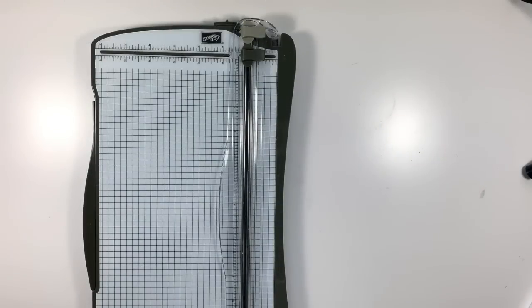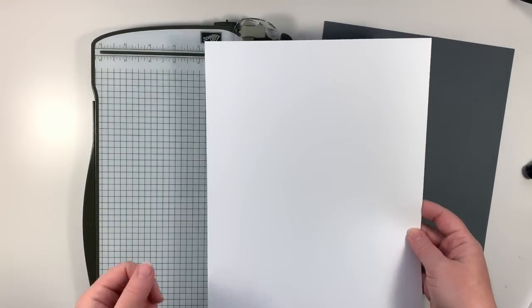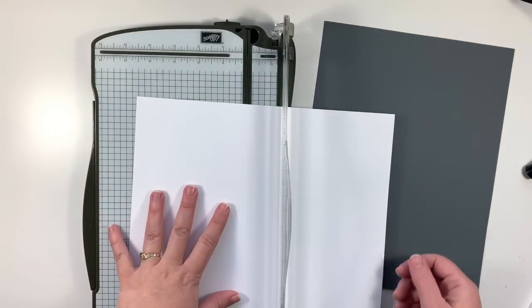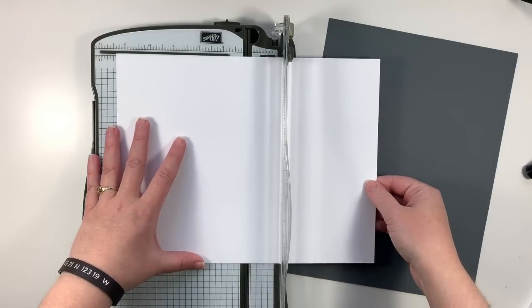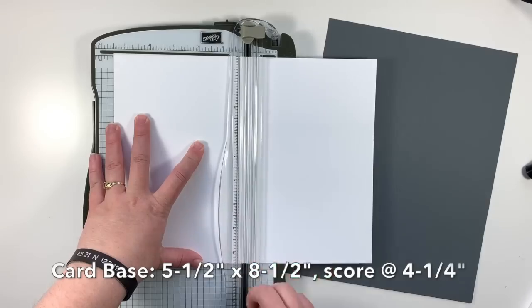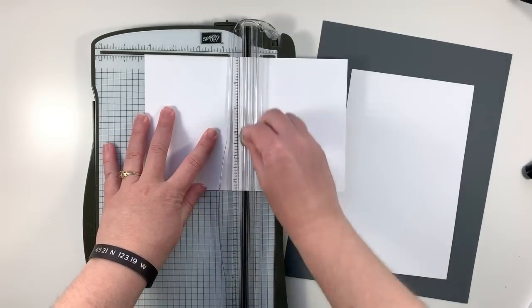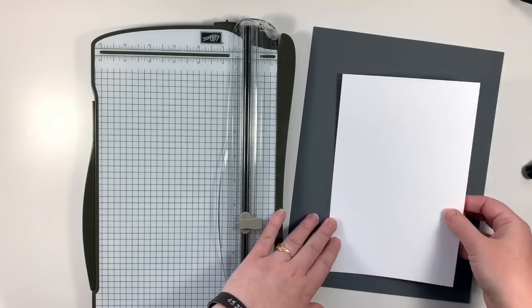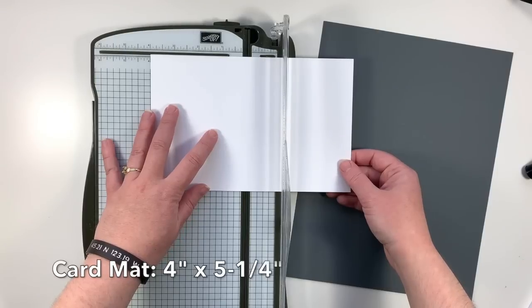First things first, we're going to do some cutting of our card stock. I have two pieces here. We have a regular 8 1⁄2 by 11 sheet of Whisper White. I'm going to cut my card base as well as the top card mat. So for my card base, it's just a standard base that we cut at 5 1⁄2 by 8 1⁄2. I'm going to go ahead and rotate that to score it at 4 1⁄4. And the card mat for the front of our card is going to measure 4 by 5 1⁄4.